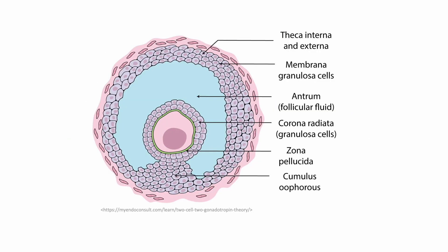A follicle has several different components. Starting from the outside and working our way in, the follicle sits within the ovarian stroma and is made up of thecal cells and granulosa cells. The thecal cells make up the outermost part of the follicle, while the granulosa cells make up the innermost part. Thecal cells are responsive to LH, and they stimulate the production of progesterone, which stabilizes the endometrium and induces endometrial secretions in the secretory phase. These cells end up providing structural and nutritive support to the oocyte and the granulosa cells.